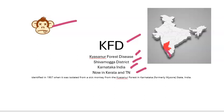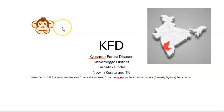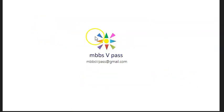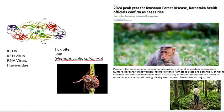It has now been found in Kerala and Tamil Nadu states as well. Initially, in 1957, the virus was obtained from a sick monkey. So the actual causative agent is a virus — this is a viral disease.